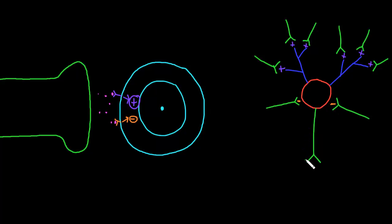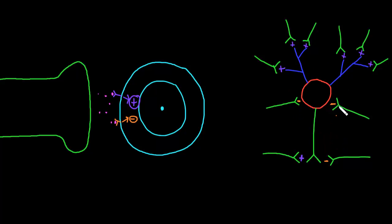Neurons often also have synapses on their axon terminals, so that other axon terminals are synapsing on the axon terminal of the target neuron. These will often be a mix of excitatory and inhibitory synapses. There is a big variety in how synapses are set up on neurons, and there would be a mix of some excitatory and inhibitory synapses at all these locations.